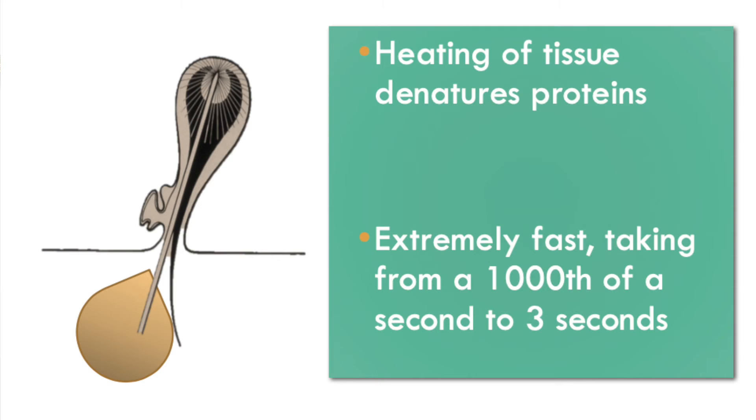In the case of thermolysis, it's actually heat that is destroying the proteins in the cell, thus killing the hair follicle. So whether you use thermolysis or galvanic electrolysis, in both cases you're using electricity to do the chemistry. In one case it's a direct current creating lye or sodium hydroxide, a very strong base. In the other case it's alternating current creating heat within the cells. In both cases the proteins are destroyed by the chemistry, which denatures the proteins and kills the hair follicle.